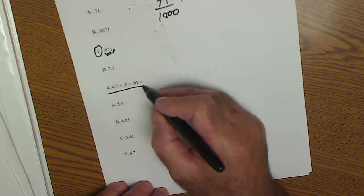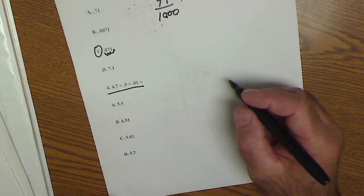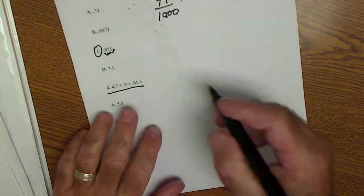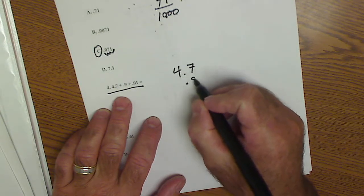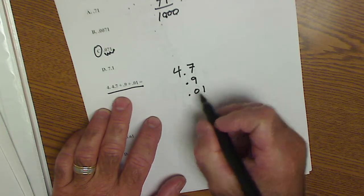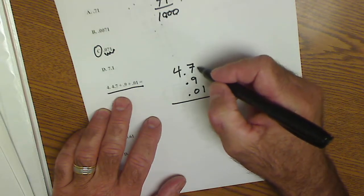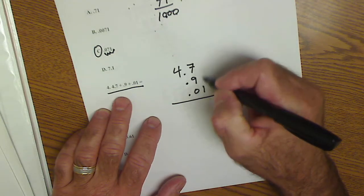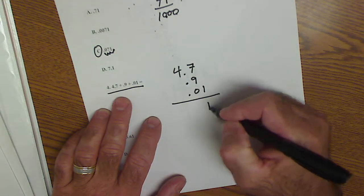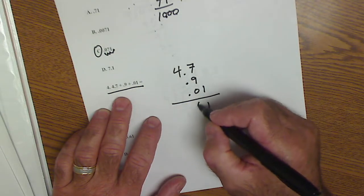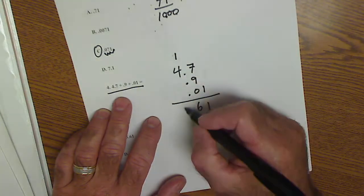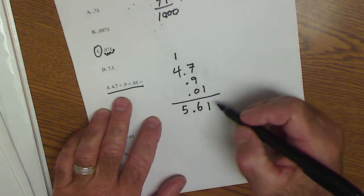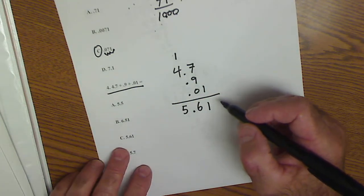Number four, I'm adding decimals. Now that I'm adding decimals, I need to line up the decimal point. So I have 4.7 plus 0.9 plus 0.01. Got to stay in good order here. There's no numbers here, so 0 and 0 and 1. 7 and 9 is 16, carry the 1, and get 5.61. That's going to be answer C.